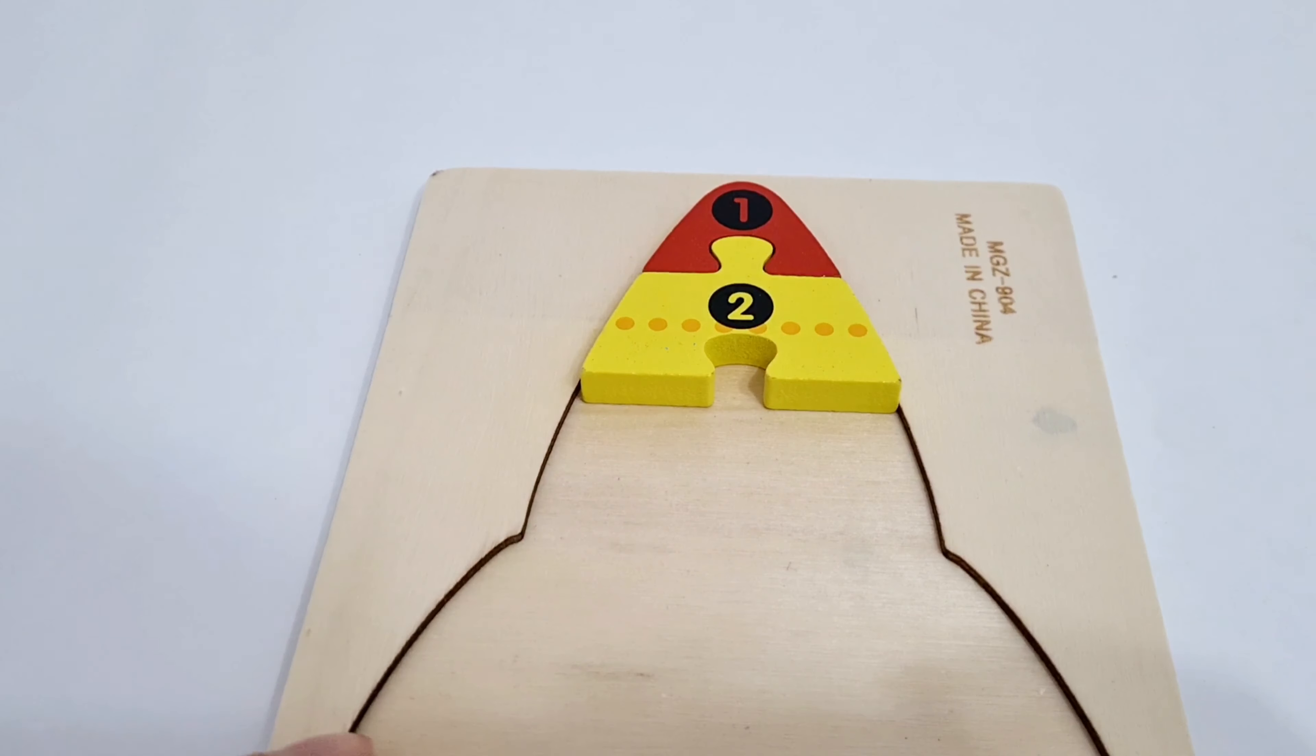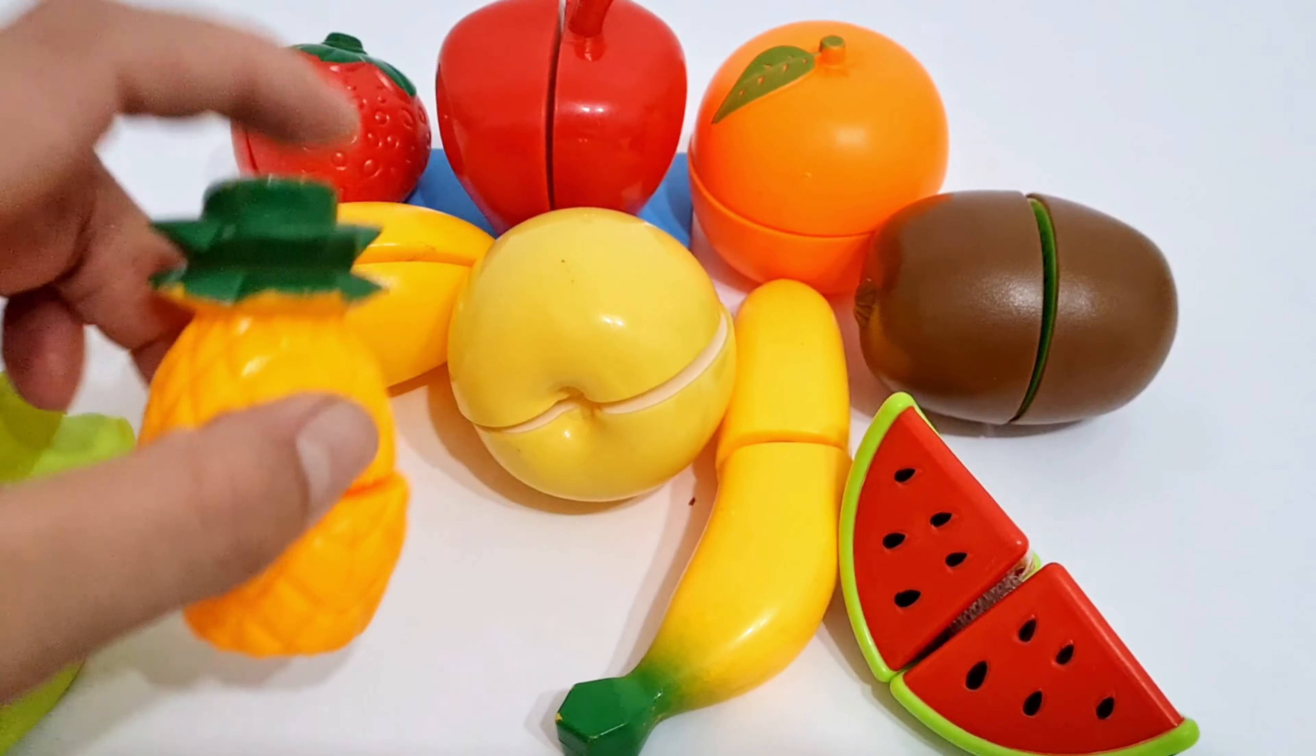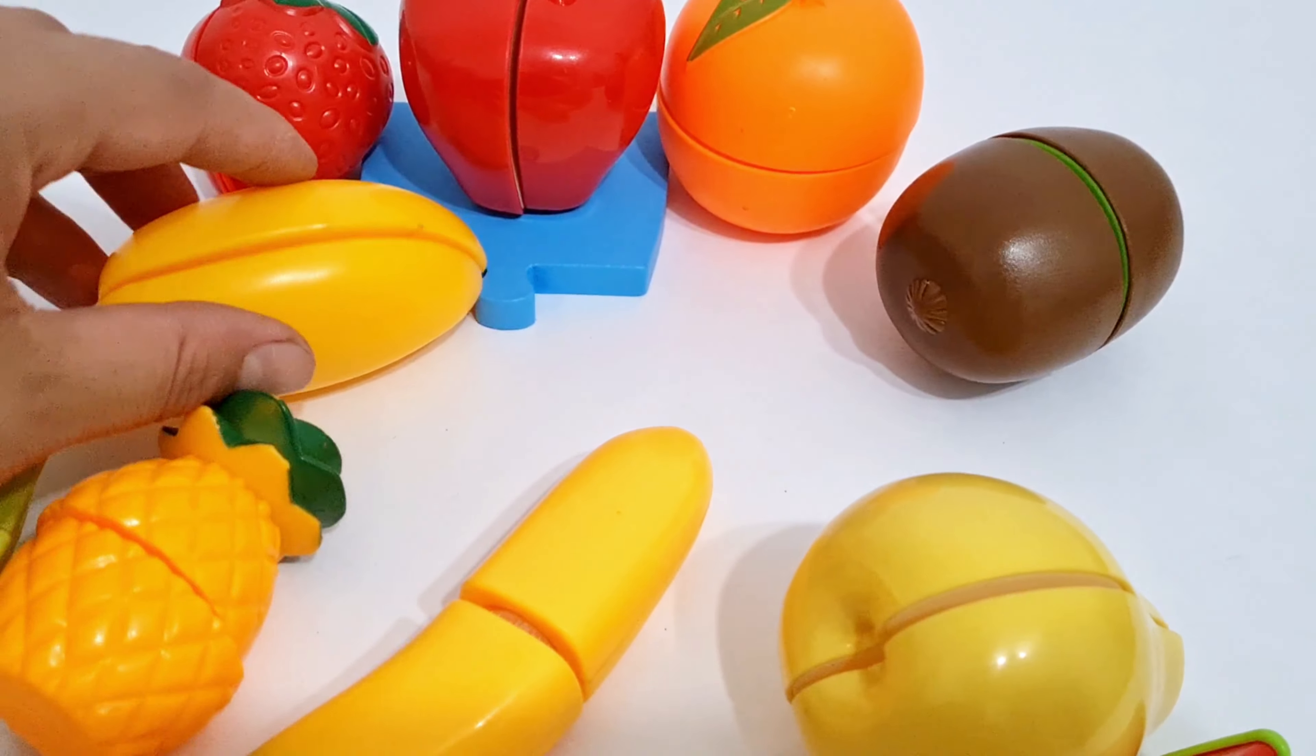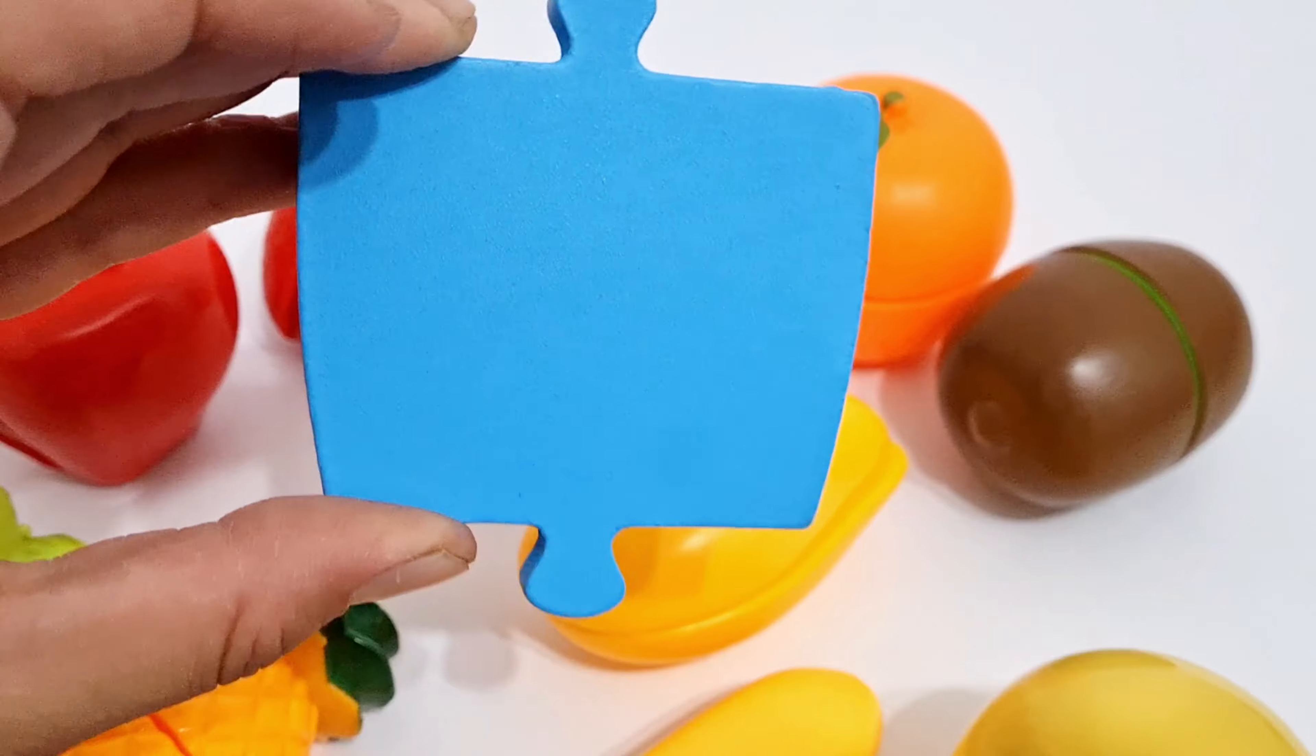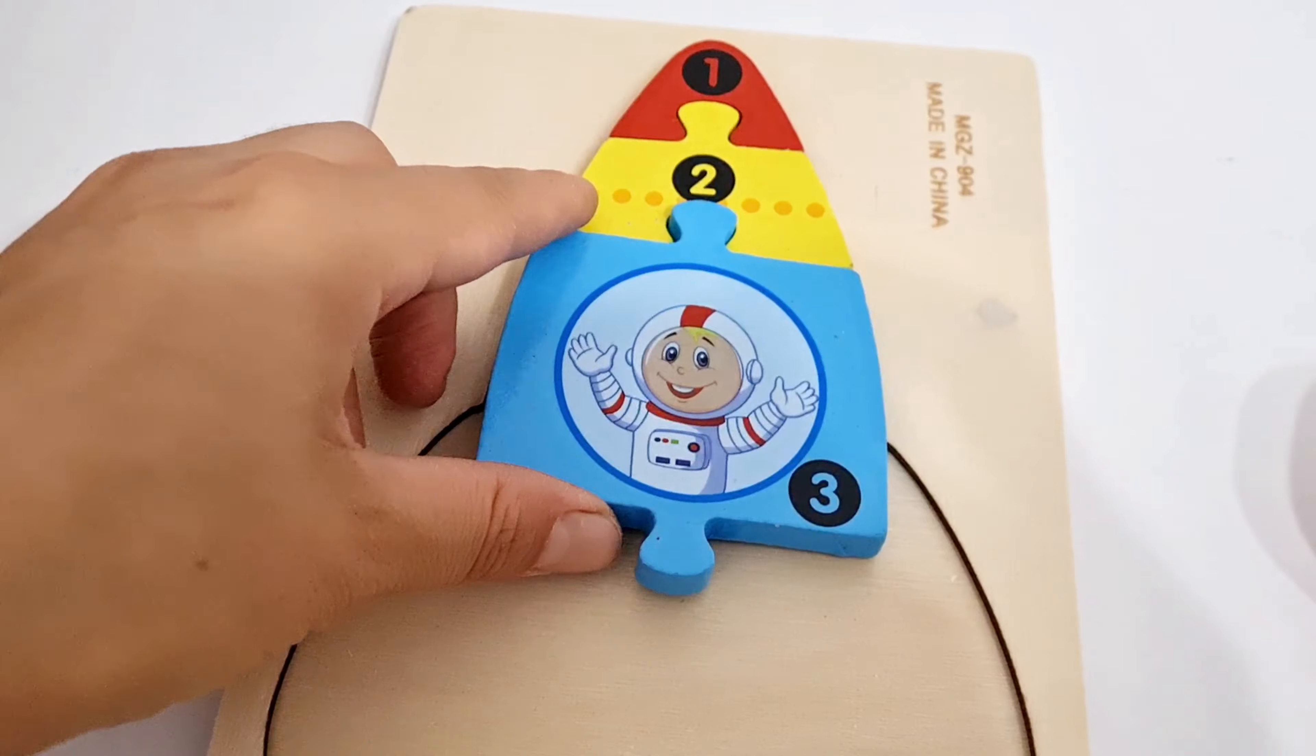Wow. Now we need number three. Let's find it. Oh, look here. Here's some fruits. Dragon fruit, pineapple, banana, watermelon. Wow guys, what delicious fruit. Pear, mango. Wow. Here under apple, we have puzzle. What number is this? You are right. It is three. Number three. We put it here.